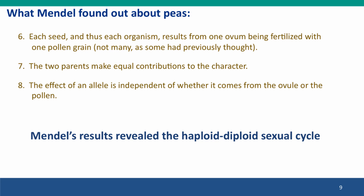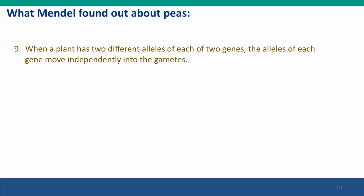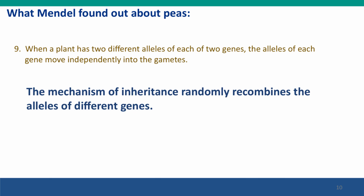So his results revealed the full haplodiploid sexual cycle. And finally, he realized that when a plant has two different versions of each of two different genes, these elements move independently into the gametes, so that what one pair of alleles was doing didn't influence what the other pair of alleles was doing. He discovered this in part because the genes he was studying were almost always on different chromosomes. This showed that the mechanisms of inheritance create new combinations of the alleles of different genes — again, a revolutionary result that nobody knew, and very important for our understanding of why sexual reproduction exists.